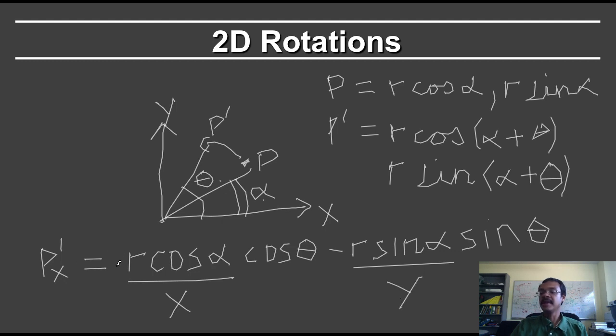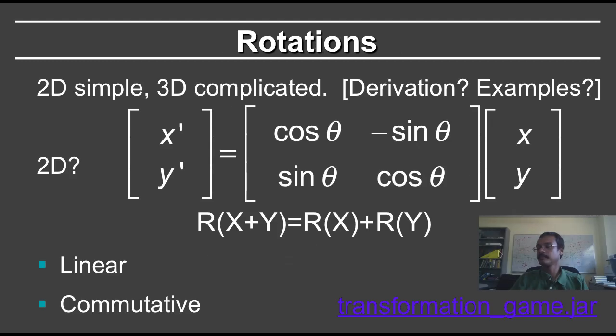And so this P prime can be written as x cos theta minus y sin theta. And putting all of that together, we see that the value of x prime is equal to x cos theta minus y times sin theta.